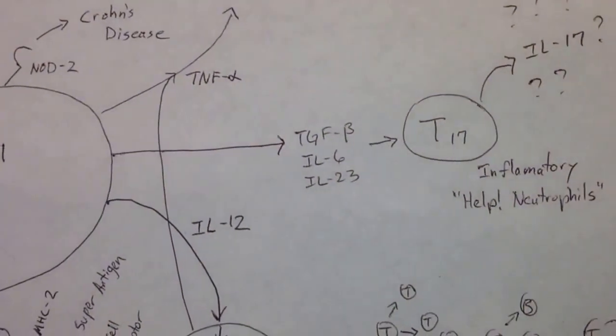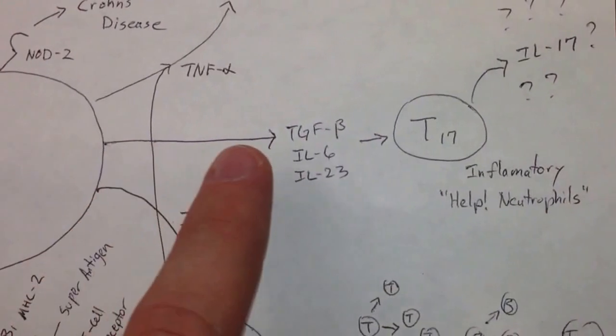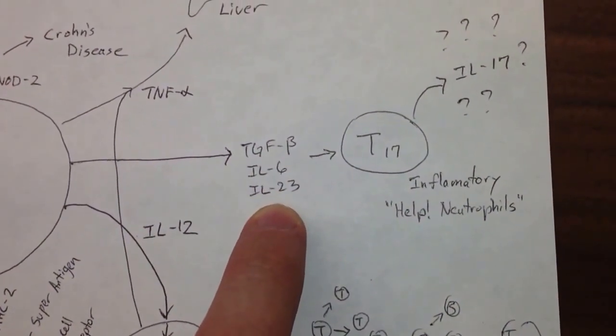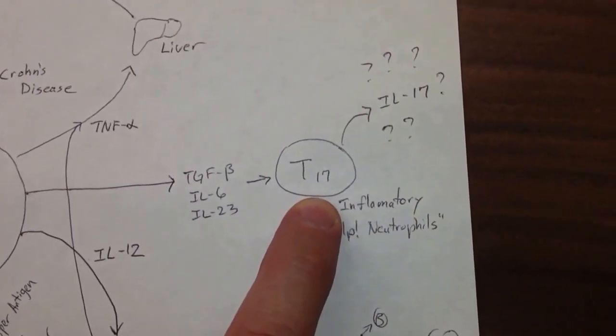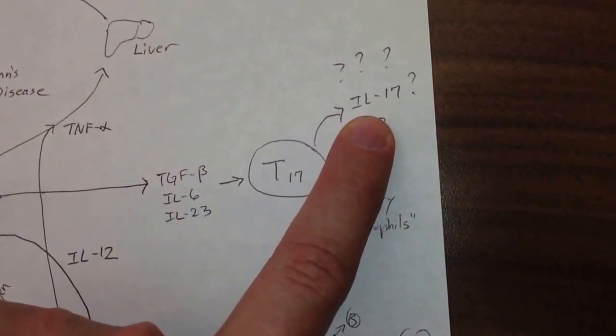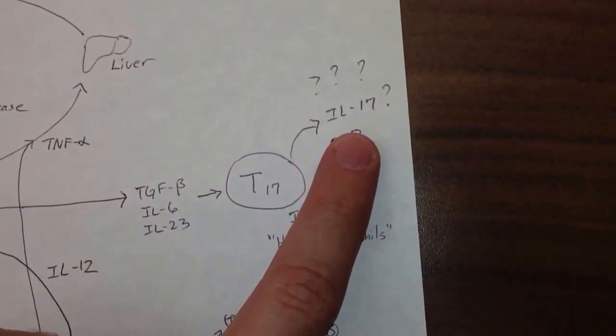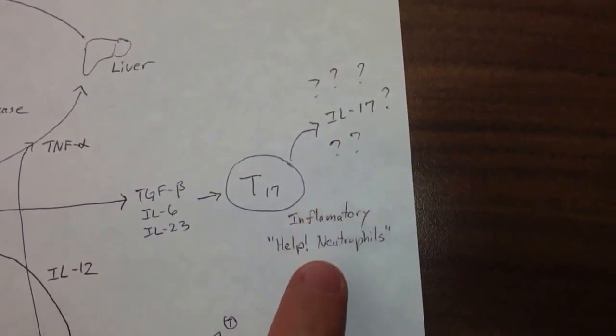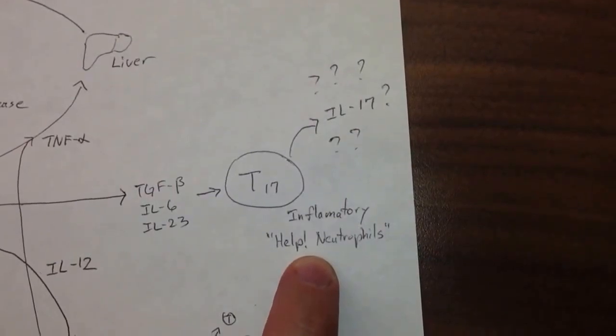So if we keep going, we can look over here to the right, and we'll see that the type 1 macrophage has secreted TGF-beta, interleukin-6, and interleukin-23, and that will tell a naive helper T cell to turn into a T17 cell, and that will start secreting interleukin-17. So T helper cell 17 secretes interleukin-17, and we apparently don't know a whole lot about interleukin-17, but we do know that it's good for inflammation and asking neutrophils to come help.